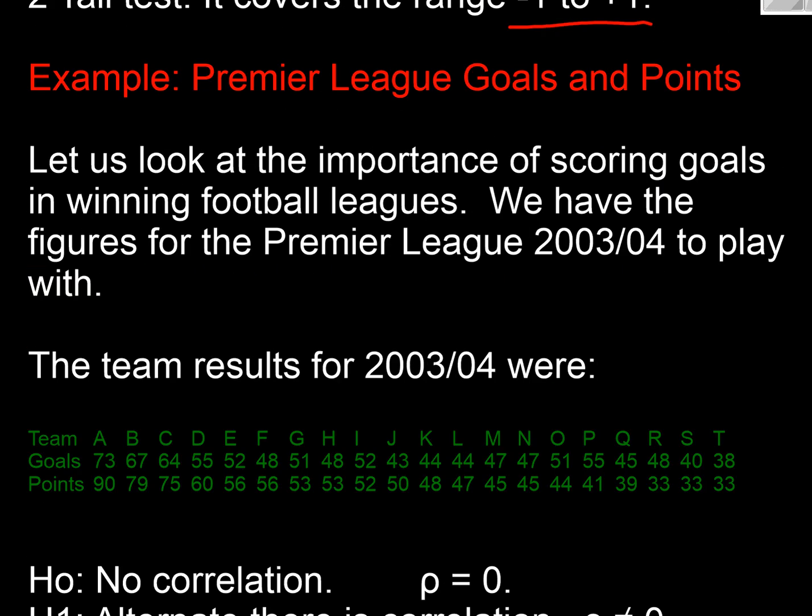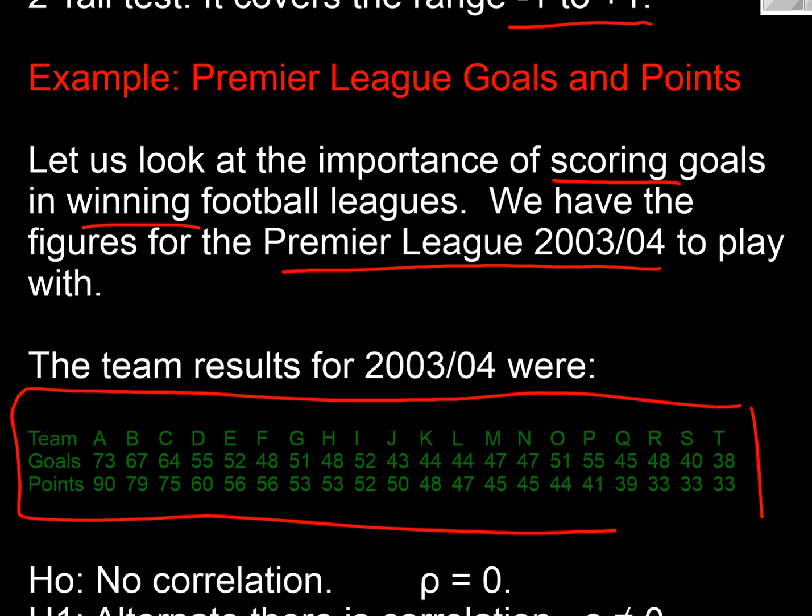So let's use the example we've been using to date on the importance of scoring goals and winning football league. And we've got the Premier League 2003-04 data to use. Here's the results we've used before. There we are. Number of goals by each team and number of points. So team A was Arsenal, who won the league, 73 goals, 90 points. Down the bottom team T, which I think was Wolves, 38 goals, 33 points.